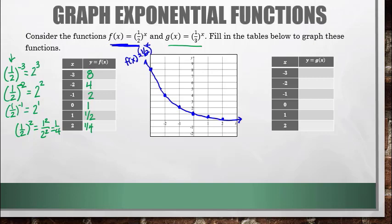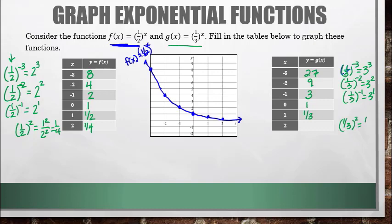Now doing g of x, which is 1/3 to the x. 1/3 to the negative 3 is the reciprocal of 1/3, which is 3, to the 3rd power, which is 27. 1/3 to the negative 2 is 3 to the positive 2, which is 9. 1/3 to the negative 1 is 3 to the positive 1, which is 3. 1/3 to the 0 power is 1. 1/3 to the first power is 1/3. And 1/3 squared is 1 squared over 3 squared, which is 1/9.